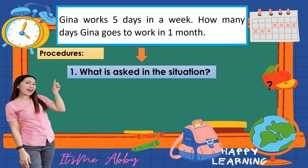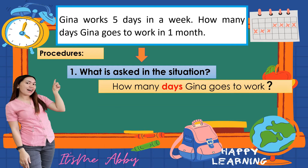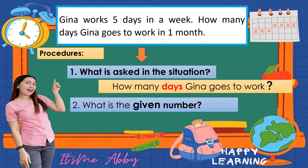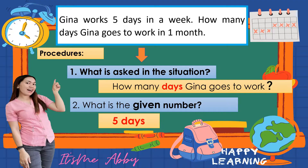What is asked in the situation? The answer is: how many days does Gina go to work — so we are finding the number of days. Second, what is the given number? The given number in the problem is 5 days.